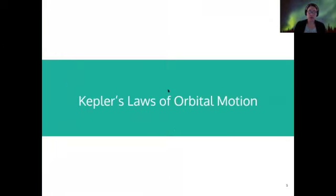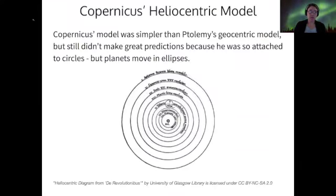So starting with Kepler's laws, just recall in the heliocentric model that Copernicus developed, it was definitely simpler than Ptolemy's geocentric model, but it still didn't make very good predictions about the locations of the planets. And this was because Copernicus was still really attached to the idea of perfect circular orbits. And in fact, the planets don't orbit in circles, but they orbit in ellipses.